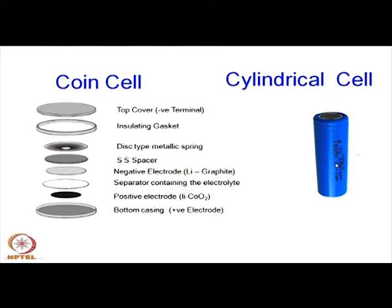Cylindrical cells are produced in a different manner, similar to a tape casting process. There are rolls of three different sheets — cathode, anode, and separator — all rolled together in the form of a coil into a cylindrical shape. These are not discrete sheets but continuous sheets which can be rolled together to form a cylinder.